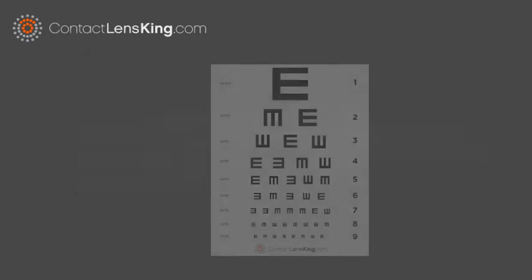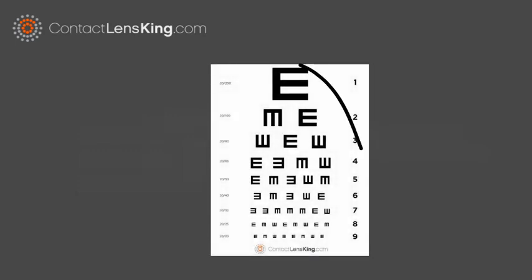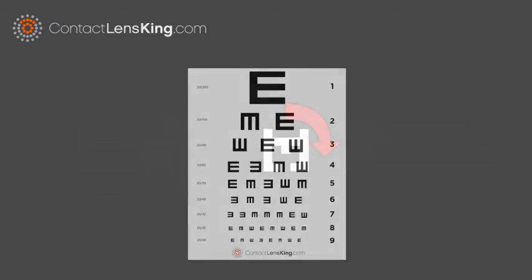The Tumbling E chart is similar to the Snellen, however it contains a series of letter E's instead of a variety of letters. These letter E's are rotated at 90 degrees, requiring the subject to properly identify the direction of each one by pointing up, down, right, or left.